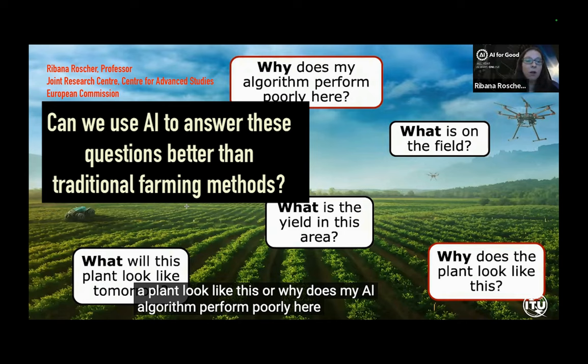They did a study, and what they were trying to do is figure out if they could use AI to answer these questions shown here. This is a field of cauliflower, and they are wondering: what will the plant look like tomorrow? What will it look like in 30 days? What is the yield in this particular region of the field versus other regions? Why does the AI algorithm perform poorly in some spots and not others?